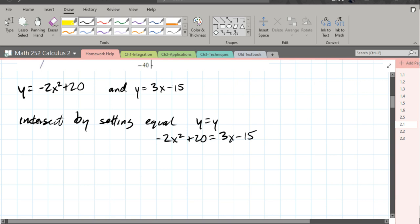So this is a quadratic equation, so we're going to get everything on one side. I'm going to solve for zero, so we're going to add 2x squared to both sides. We're going to subtract 20, so we have minus 15 - oh, minus 20 is minus 35.